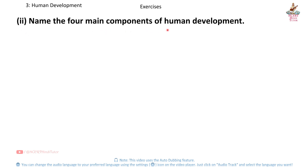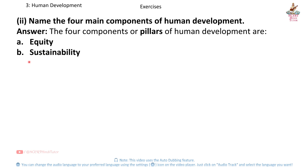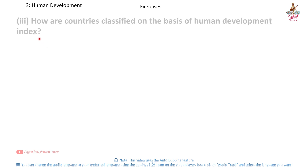Question 2: Name the 4 main components of human development. Answer: The 4 components or pillars of human development are: A) Equity, B) Sustainability, C) Productivity, D) Empowerment. These ensure fairness, long-term progress, better human capacity and freedom of choice.